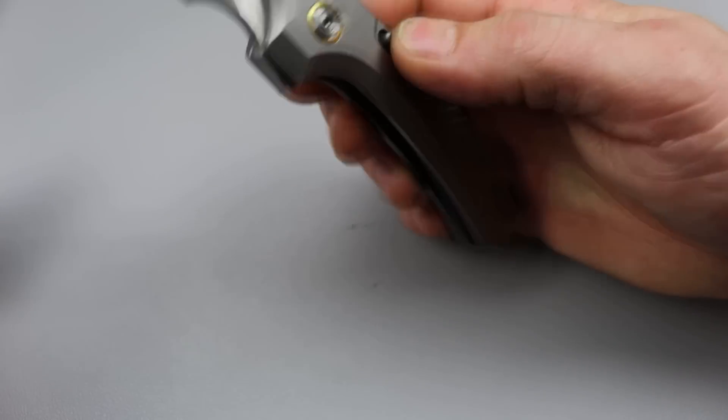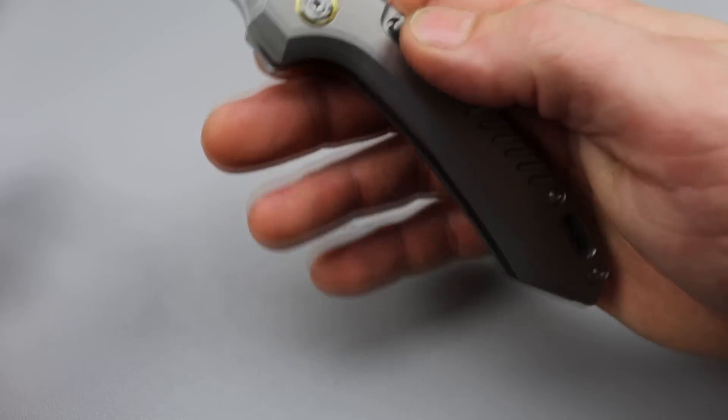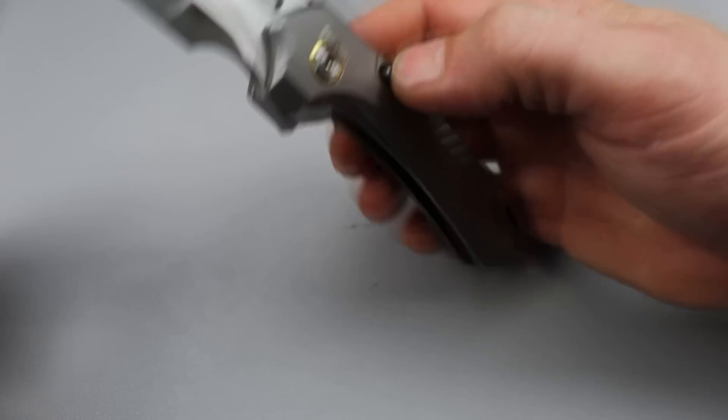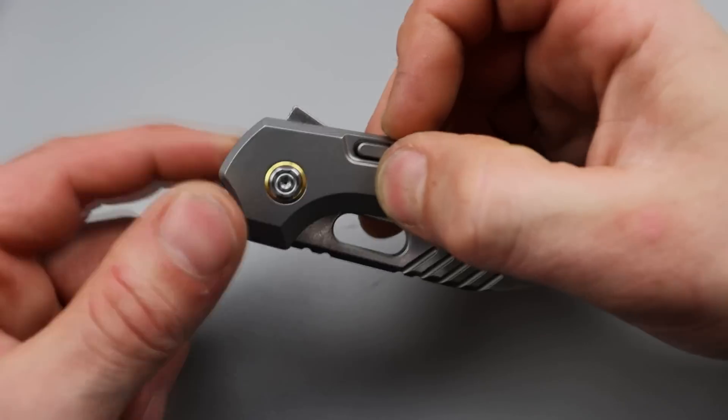So you have a liner that wedges itself between the stop pin and the tang of the blade, just like a compression lock, making this thing an absolute vault. It's very, very solid. Yeah, look at this. Stupid smooth. I mean, this thing, like there's no resistance. It almost feels like it's loose. That's how drop shutty it is.